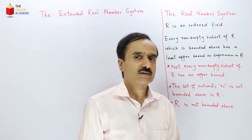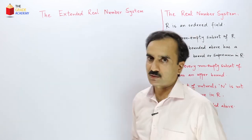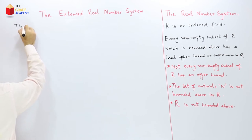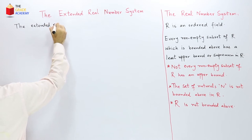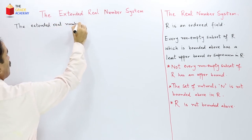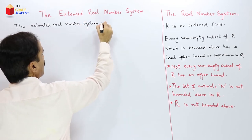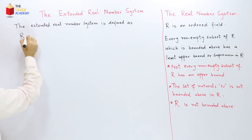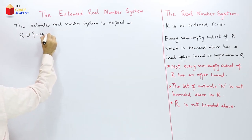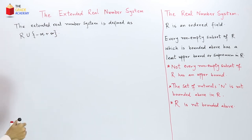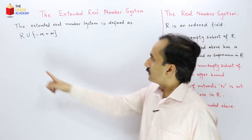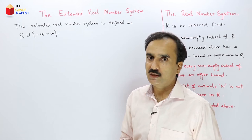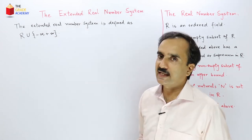These shortcomings are overcome by the existence of the extended real number system. The extended real number system is defined as the set of real numbers R together with two symbols, negative infinity and positive infinity. So the set of real numbers together with these two symbols is called the extended real number system.